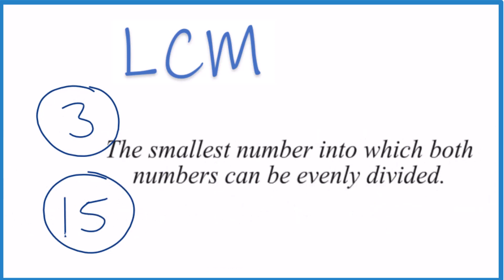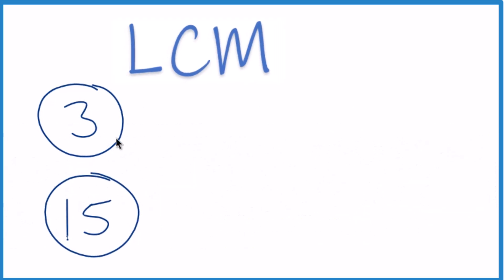So let's look at that. What we can do is find the multiples of 3 and then 15, look at the ones in common, and choose the smallest number.